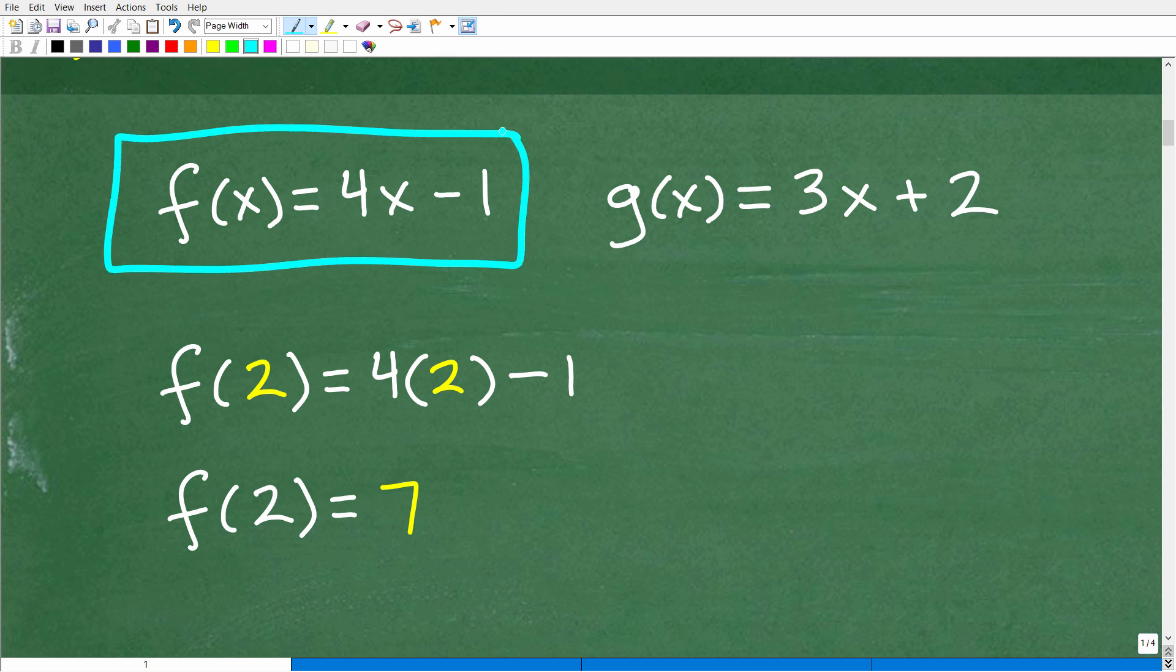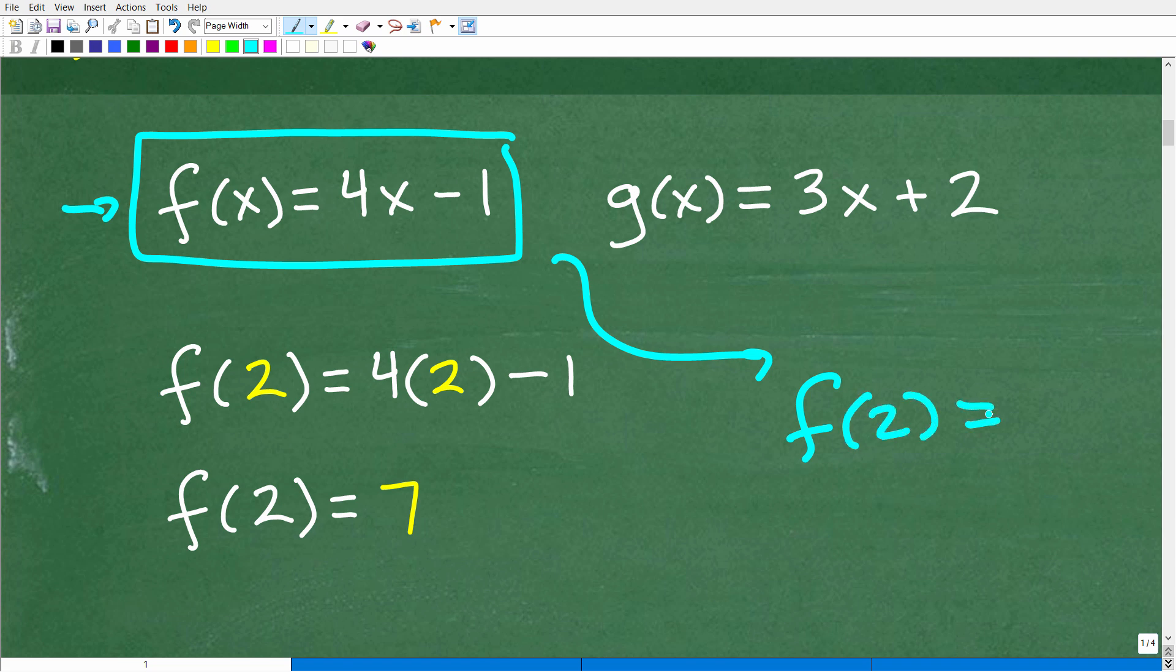But let's go ahead and take a look at this function right here. Okay, so we have f(x) equal to 4x minus 1. And let's just evaluate this function right here for 2. In other words, I have this function, and we want to find f(2). Okay, so we're going to be plugging in a value into the function. So what does that mean?